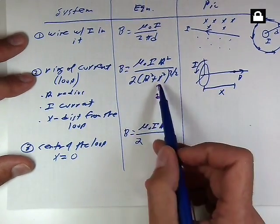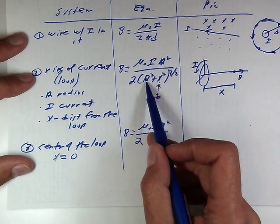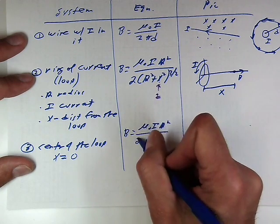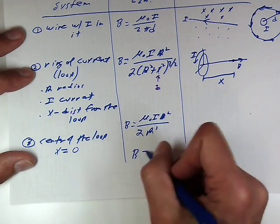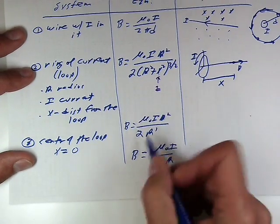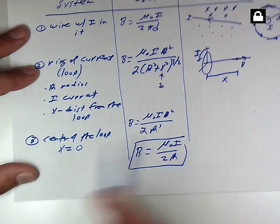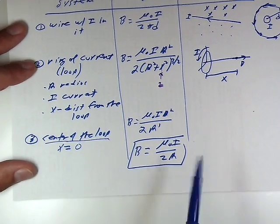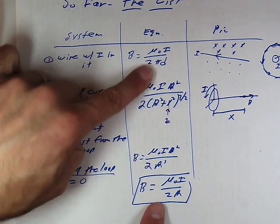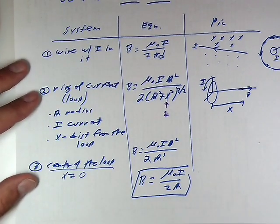We'll get mu naught I over r squared and divide it by 2. Now what we have in the bottom here, if x is zero, we get r squared to 3 halves power, which just gives us r cubed. And now we can do a bit of cancellation here and get that b is mu naught I over 2r. So we get a result here for the magnetic field at the center of a loop. It looks remarkably like the one due to the wire, but there's no pi in there, so don't get them confused.